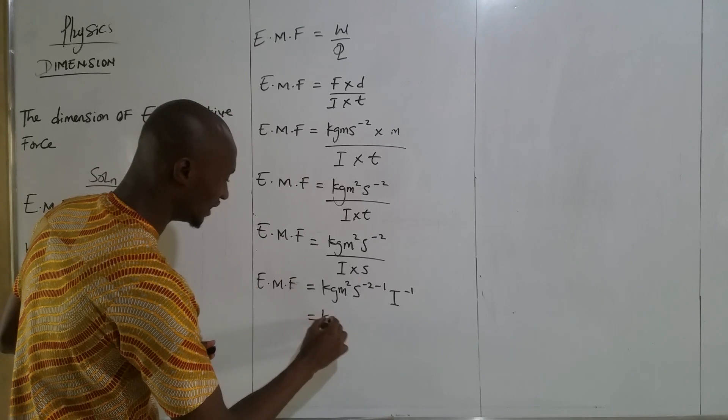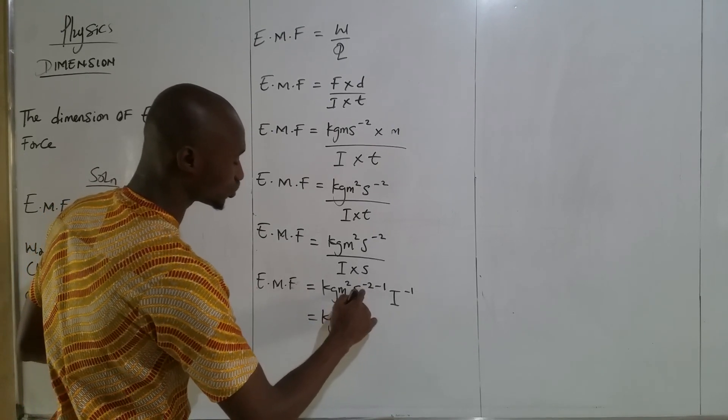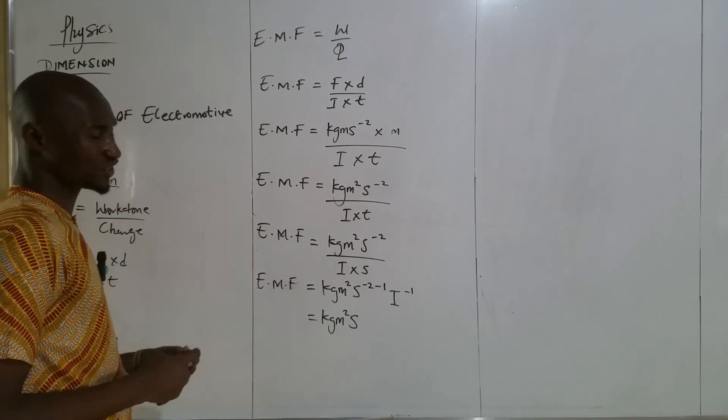This equals to EMF: kg m² s⁻² minus 1, I⁻¹. This equals to kg m² s⁻¹ minus minus 2 minus 1, which is minus 3.